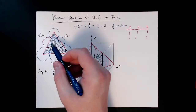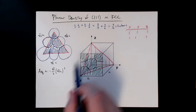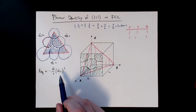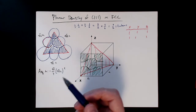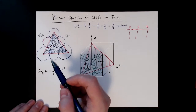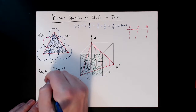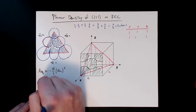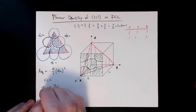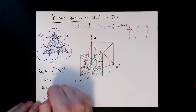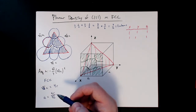We have the atom count and the area in terms of a, but the planar density equation uses r, so we need the relationship between a and r. From the linear density video we already calculated this along the close-packed direction: √2·a = 4r, which gives a = 4r/√2.